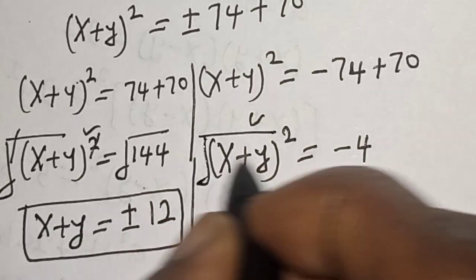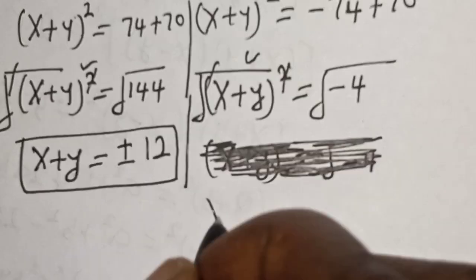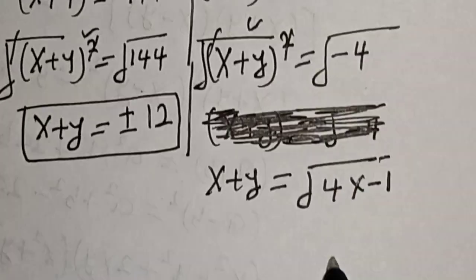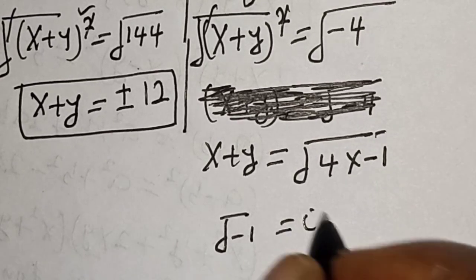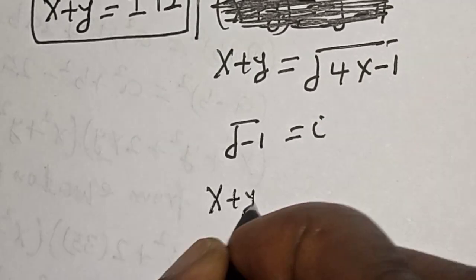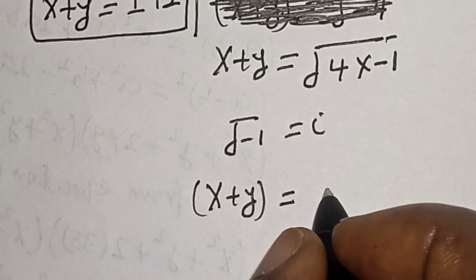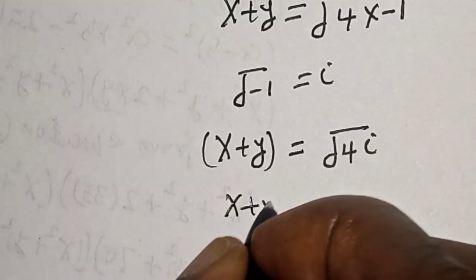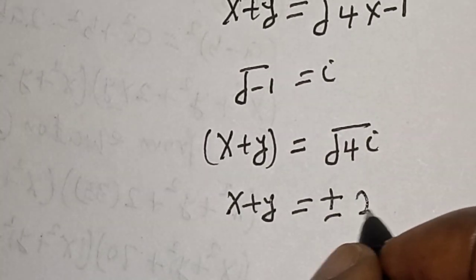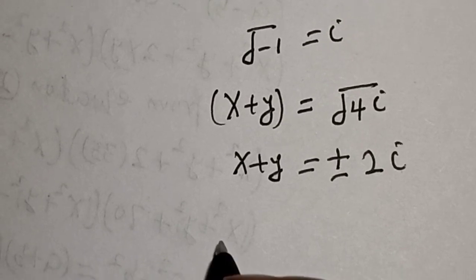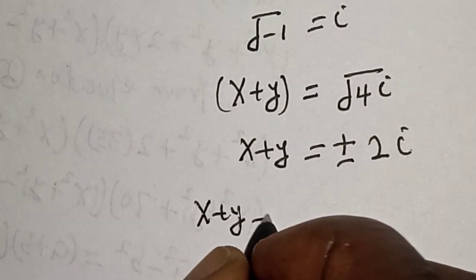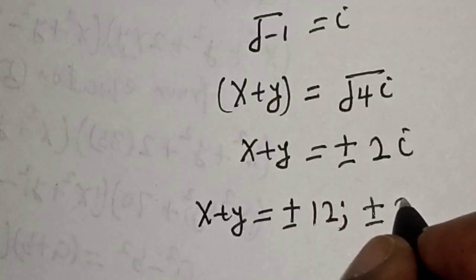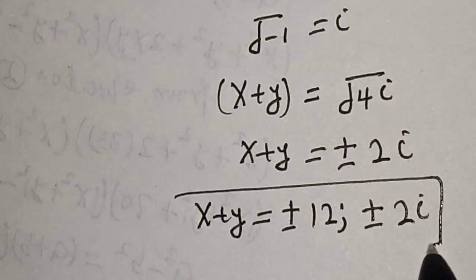Taking the square root of both sides of case two, x plus y equals the square root of negative 4, which equals the square root of 4 times negative 1. Since the square root of negative 1 equals i, we get x plus y equals plus or minus 2i. Therefore our final answers are x plus y equals plus or minus 12 and plus or minus 2i.